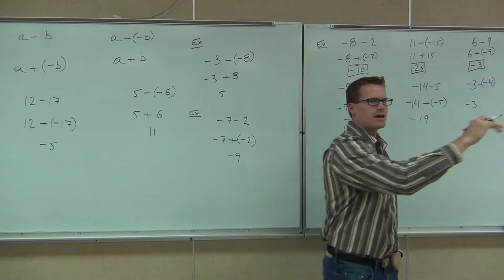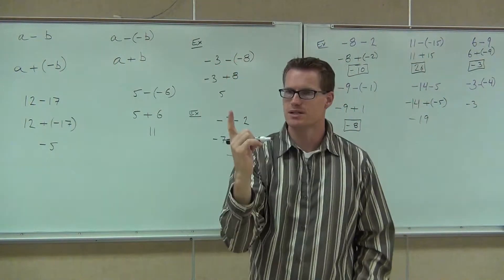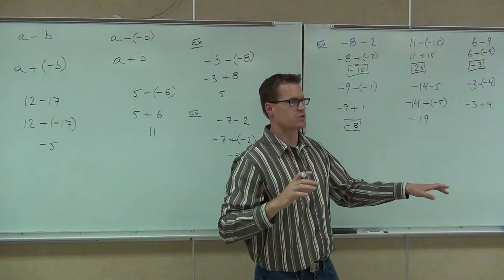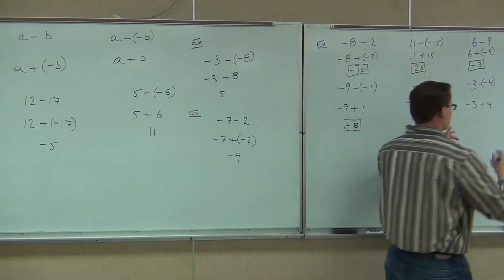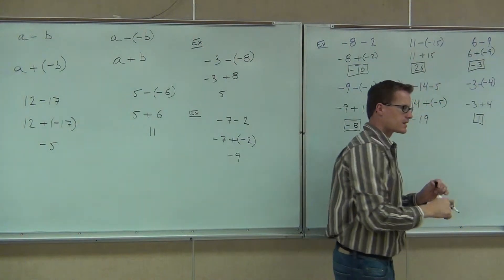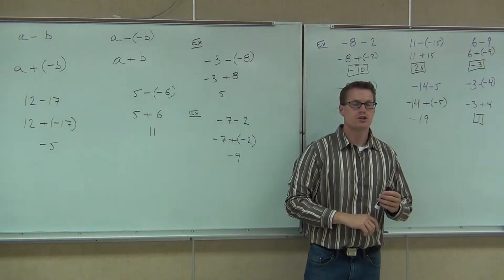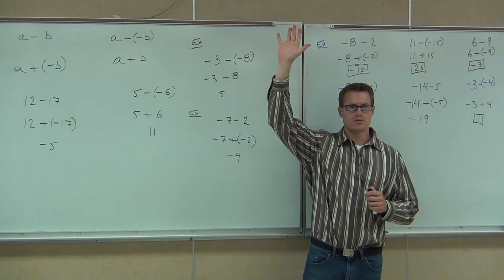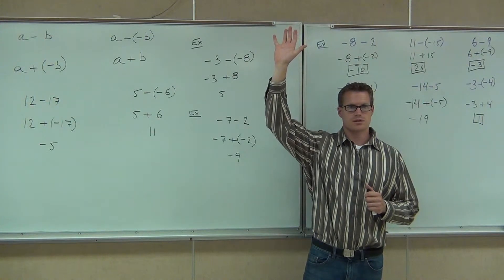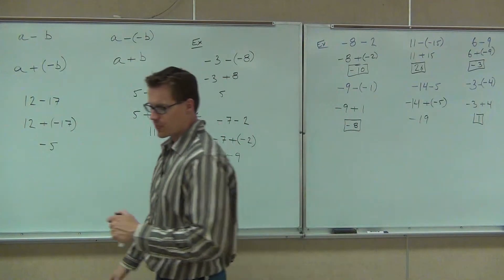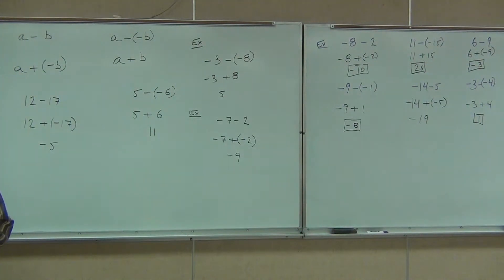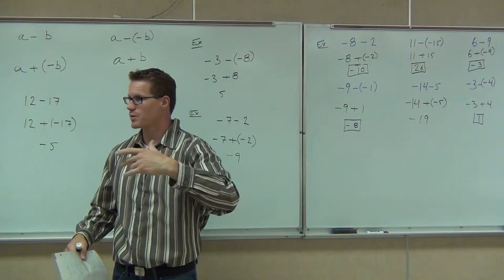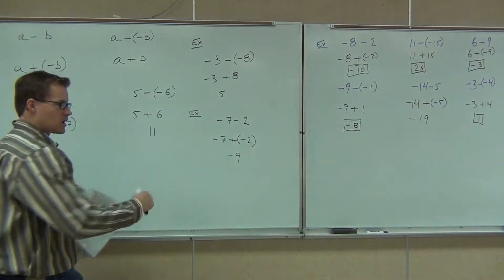Last one we've got on the board here. We've got the minus and negative. That's two signs. We're going to change the two same signs into one different sign. That's going to be negative 3 plus 4. We'll use the addition rules. Different signs mean we're subtracting. Sign of the bigger number gives us a positive 1. What I'd like to know is how many people got at least two of these right. That means two or more. Keep your hands up if you got three or more right. Four, five, all six. Good for you guys. Good if you got all six. That's fantastic.